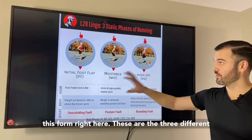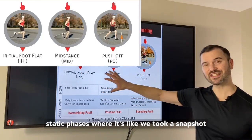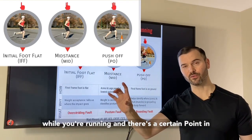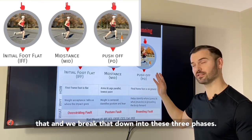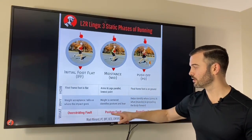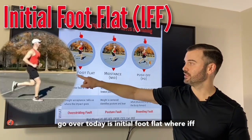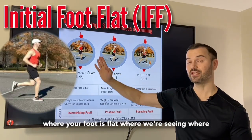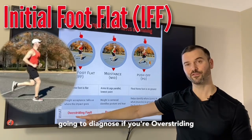We're going to get started with this form right here. These are the three different static phases where it's like we take a snapshot while you're running, and there's a certain point in that, and we break that down into these three phases. These are going to help us to determine and diagnose each form fault. The one we're going over today is initial foot flat, or IFF — where your foot is flat, where we're seeing where that weight acceptance is, and this is how we're going to diagnose if you're overstriding.